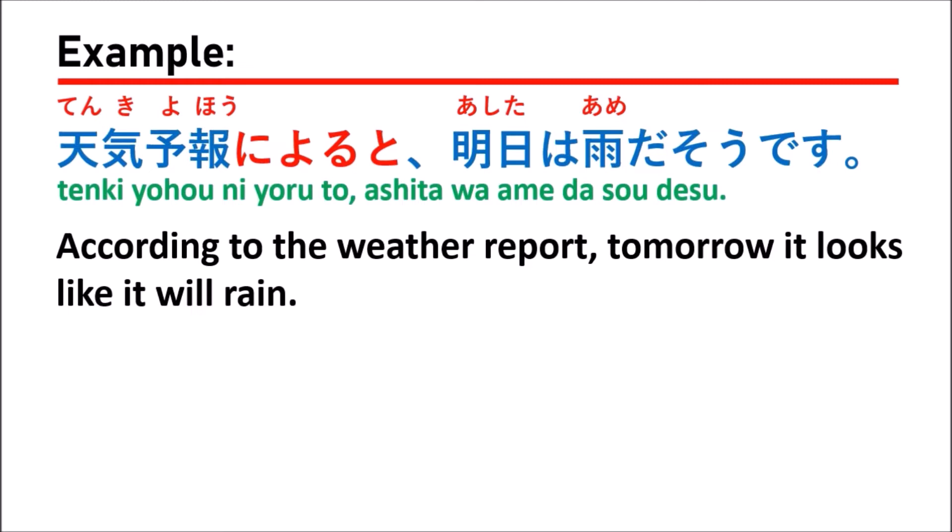In this example, you see that they use ni yoru to with the noun 天気予報. 天気予報 means 'weather report' — the weather report every day. For example, if you want to know about the weather tomorrow, you should look at the weather report.